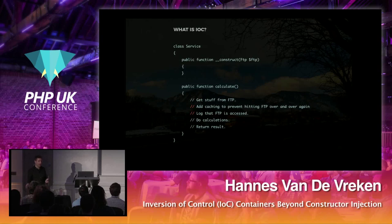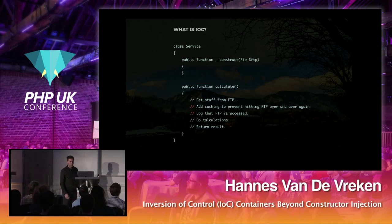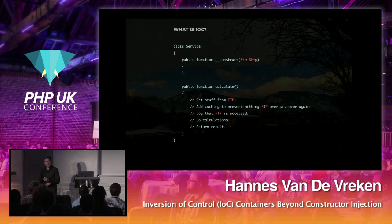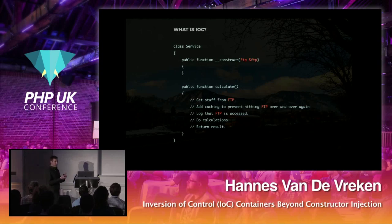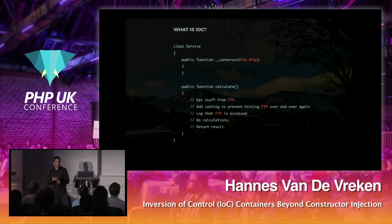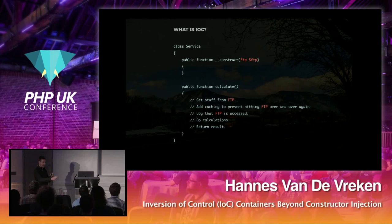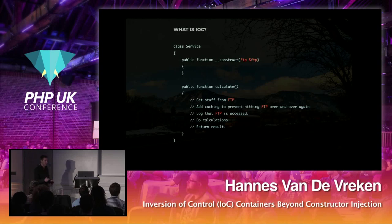That's kind of a code smell, but okay, it works. Later on, we see that we depend a lot on FTP here — we depend on FTP to get some stuff, we cache what we get from FTP, we log what we get from FTP. That's a super easy refactor: just get everything that has to do with FTP and extract it to a different class.